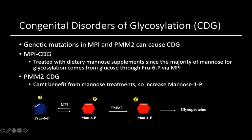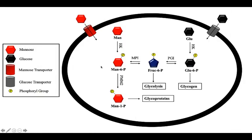For MPI-CDG, let's go back to our pathway. If we don't have enough MPI, that means that we cannot produce enough mannose-6-phosphate that is derived from glucose, because we can't convert this fructose to mannose-6-phosphate. And we know from previous studies that the majority of glycoproteins have mannose that originate from glucose, so only a smaller portion actually come from exogenous mannose. Because of this, the cells are not able to produce enough glycoproteins, and so this MPI deficiency leads to the CDG disorders.